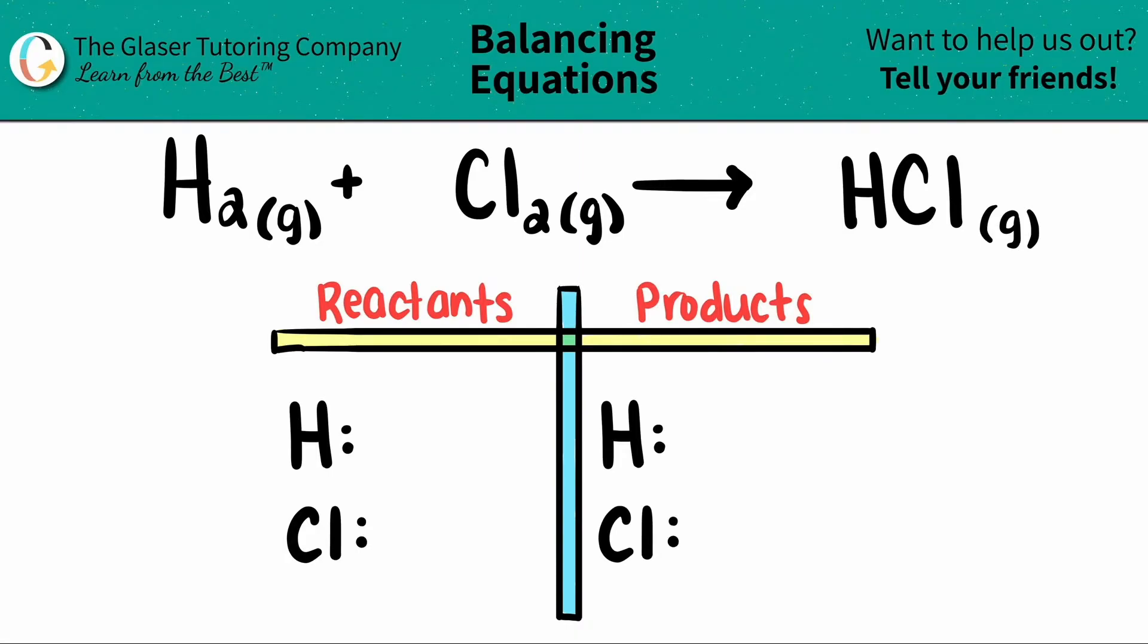Today, we're going to be balancing the equation of H2 gas plus Cl2 gas, which will produce HCl gas. I already wrote us a chart and the elements that I see that are on the left and the right side. So all we have to do is just start numbering how many we have of each, and then we will get to balancing.